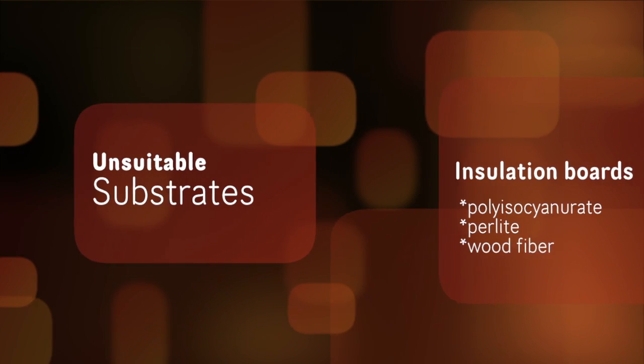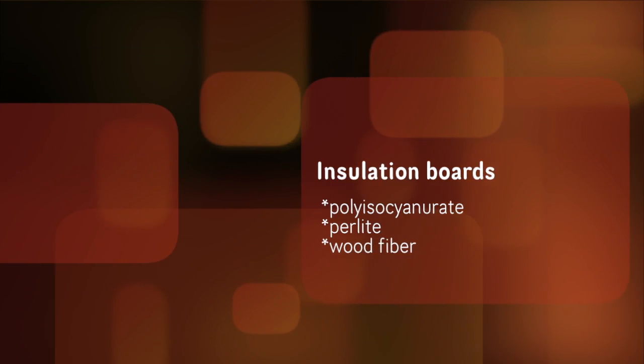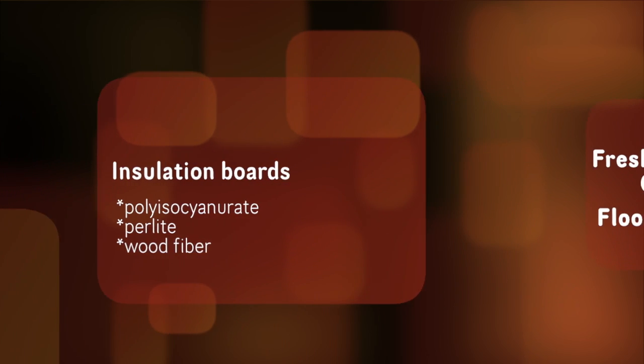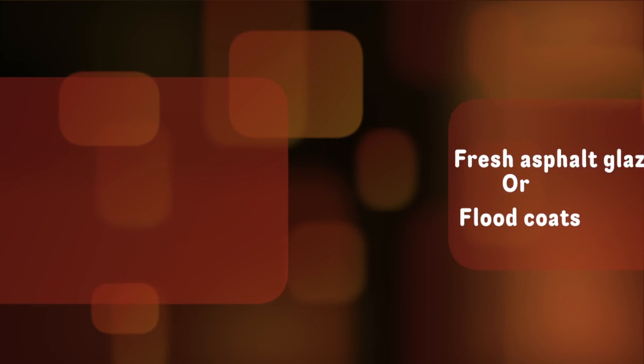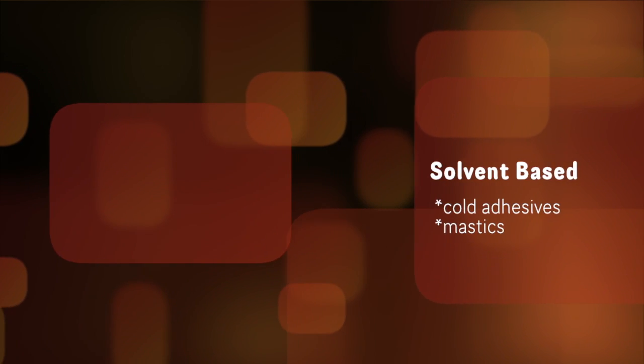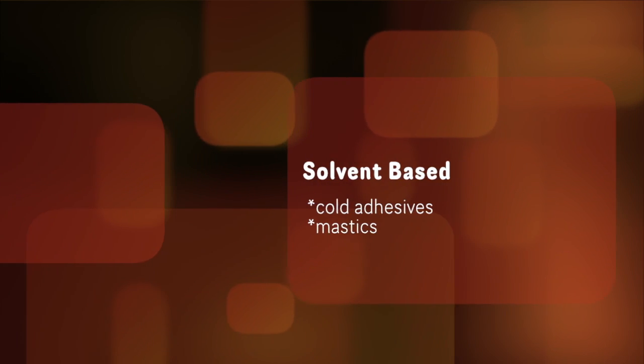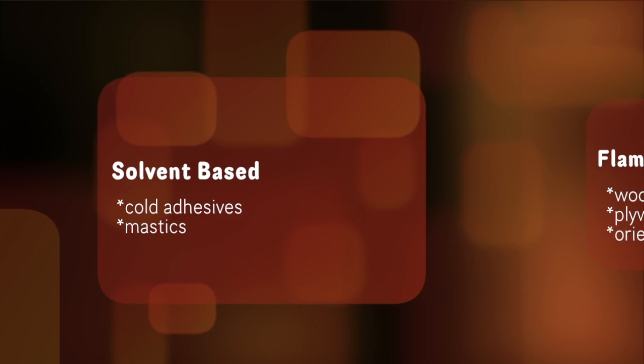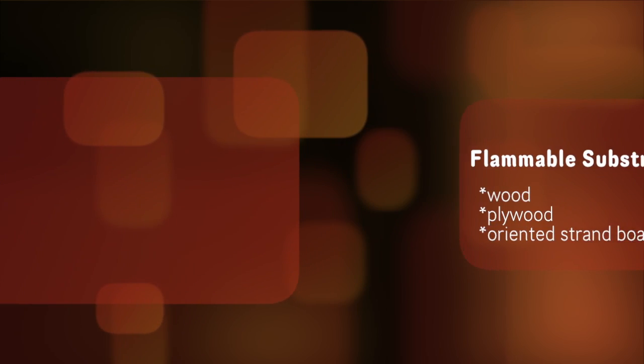Unsuitable substrates are insulation boards such as polyisocyanurate, perlite, or wood fiber, fresh asphalt glazes or flood coats, areas with solvent-based cold adhesives or mastics, or any other flammable substrates such as wood, plywood, or oriented strand board.